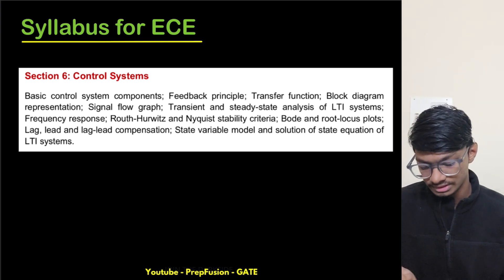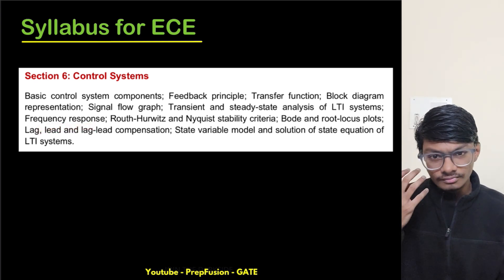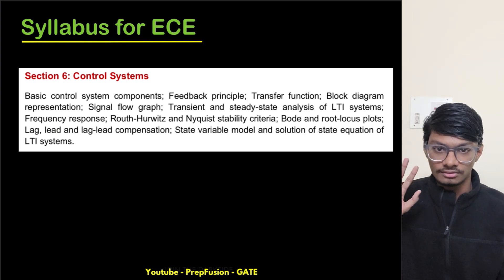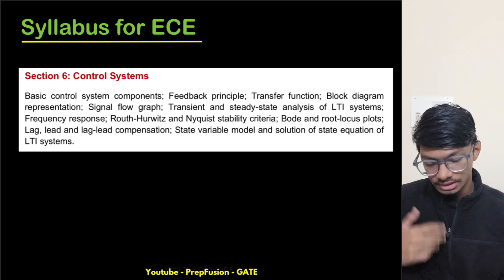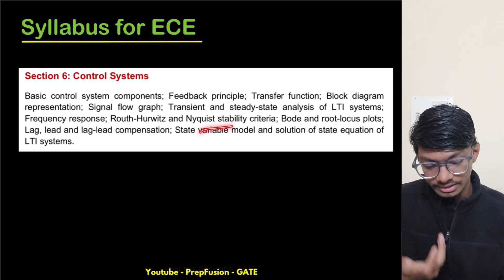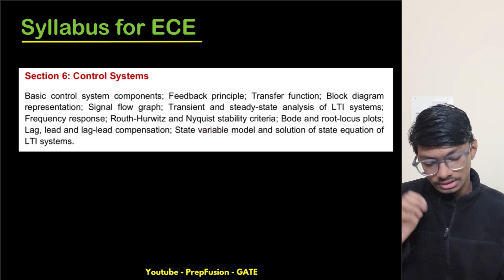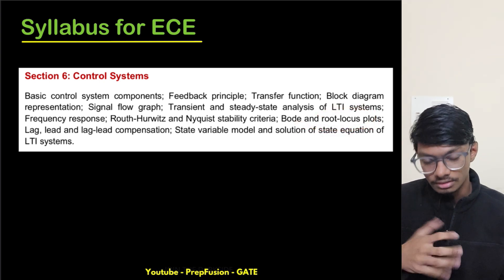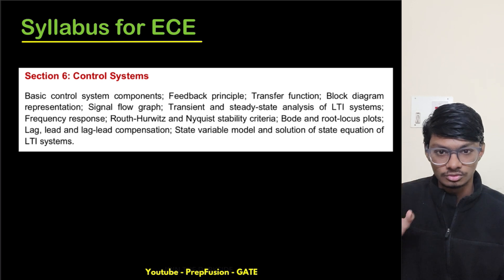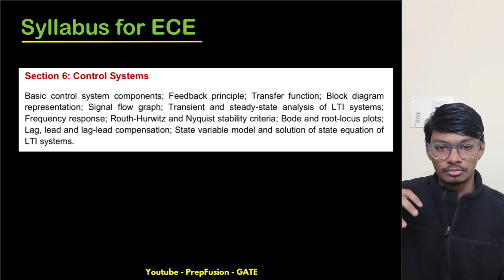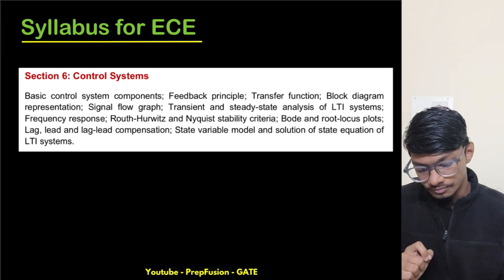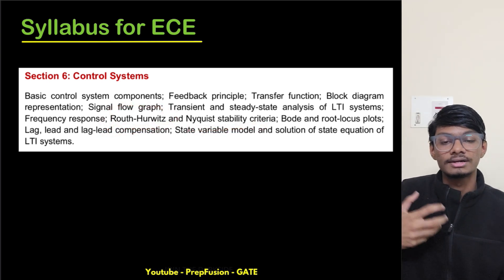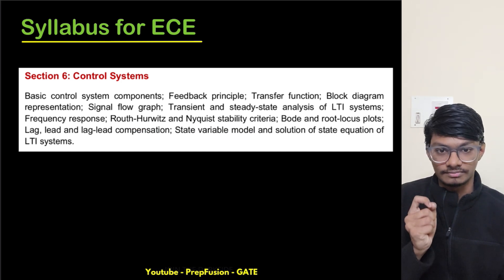Then we have frequency response, where you can find the stability using frequency domain characteristics — Bode plots, Nyquist stability criteria, and polar plots. Root locus is also covered here, where we find the poles of the closed-loop system from the open-loop poles and zeros. The Routh-Hurwitz and Nyquist stability criteria are used to determine the stability of the system.